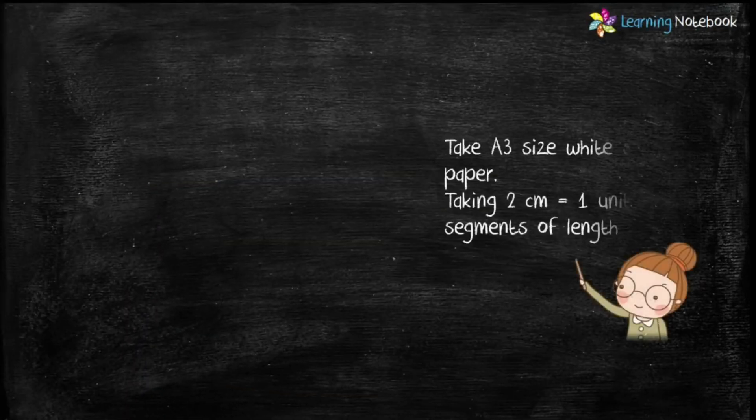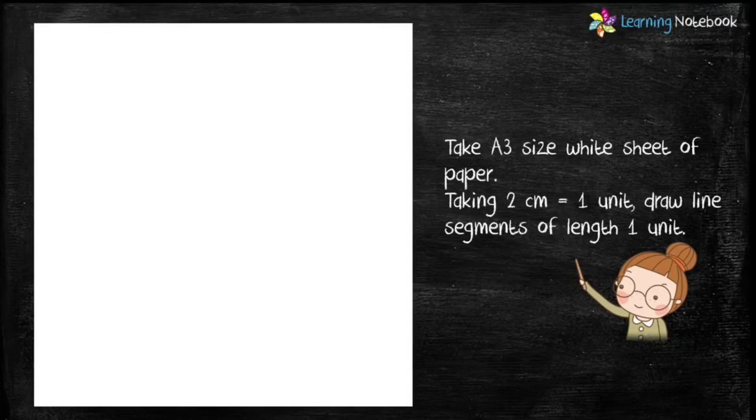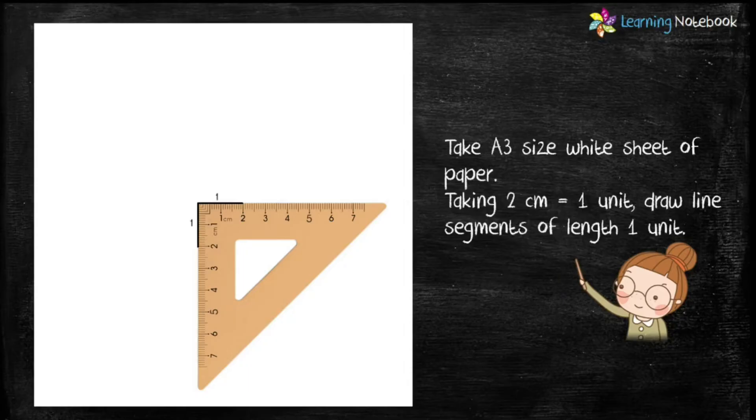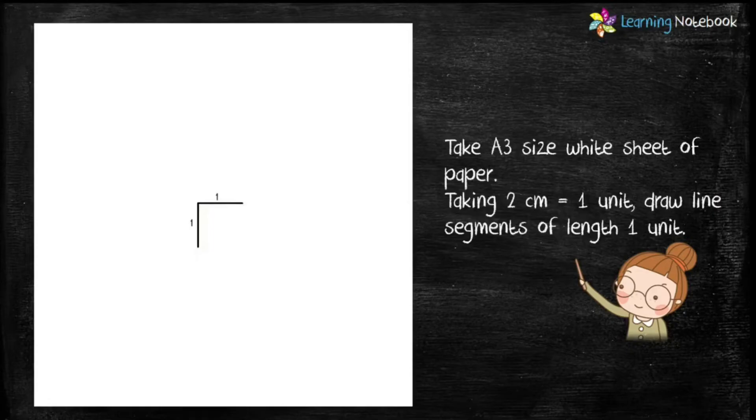Let's start with the activity. Take an A3 size white sheet of paper. Taking 2 cm equals to 1 unit, draw line segments of length 1 unit perpendicular to each other using a set square.